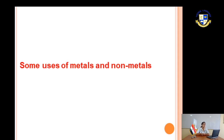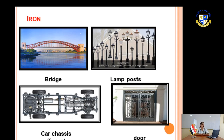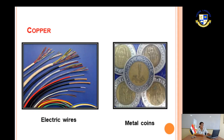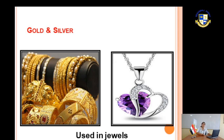Some uses of metals: iron is used in making bridges, street lights, and car frames. Aluminium is used in making cooking pots and foil. Copper is used in making electric wires and coins. Gold and silver are used in making jewels. Iron, copper, aluminium, gold, and silver are all metals.